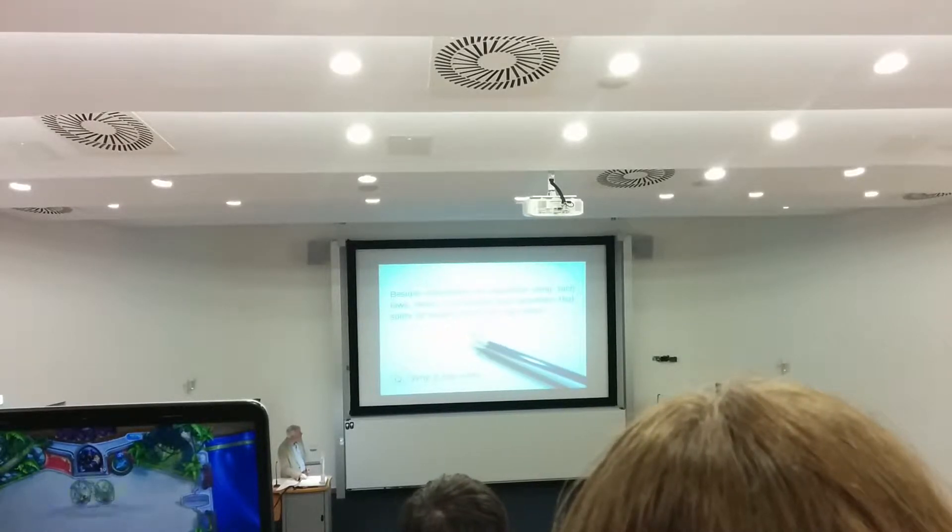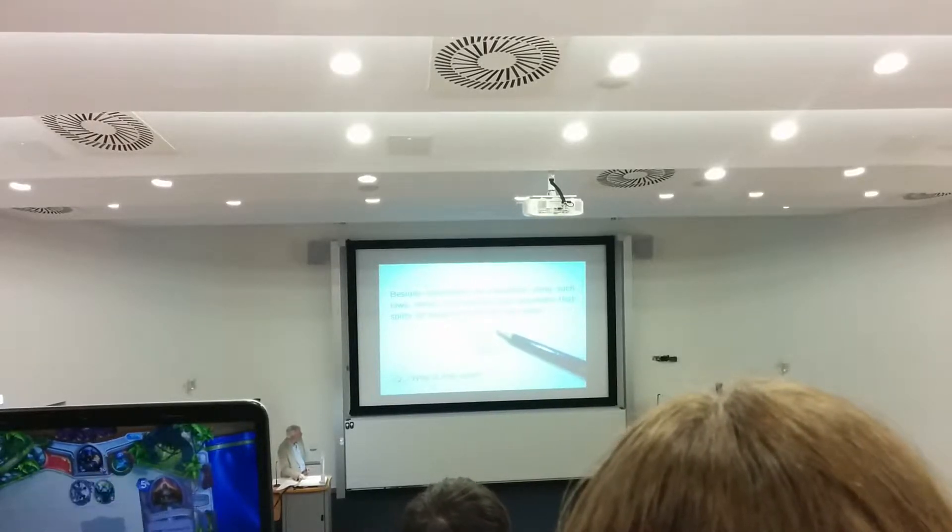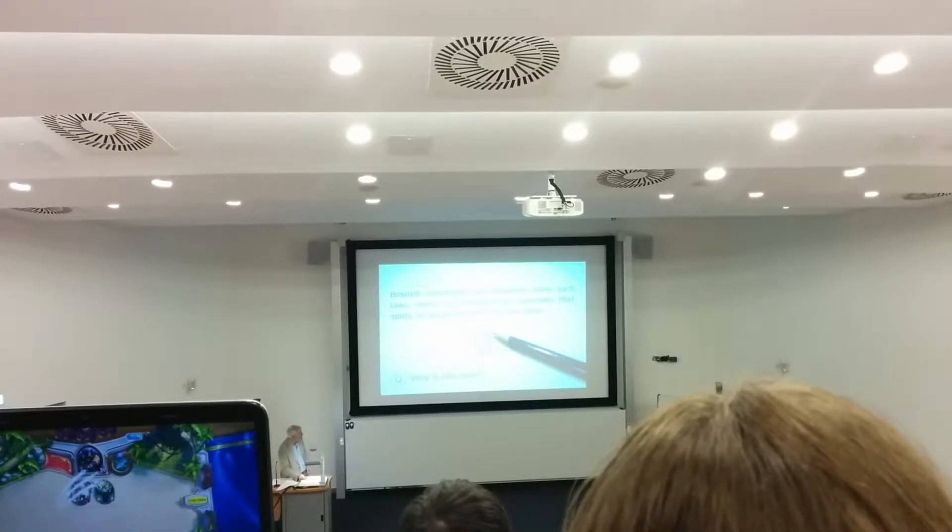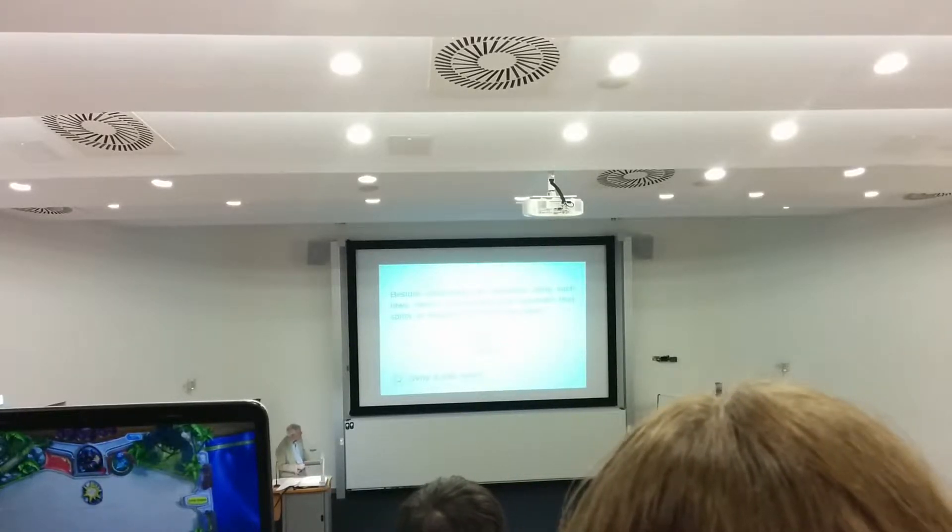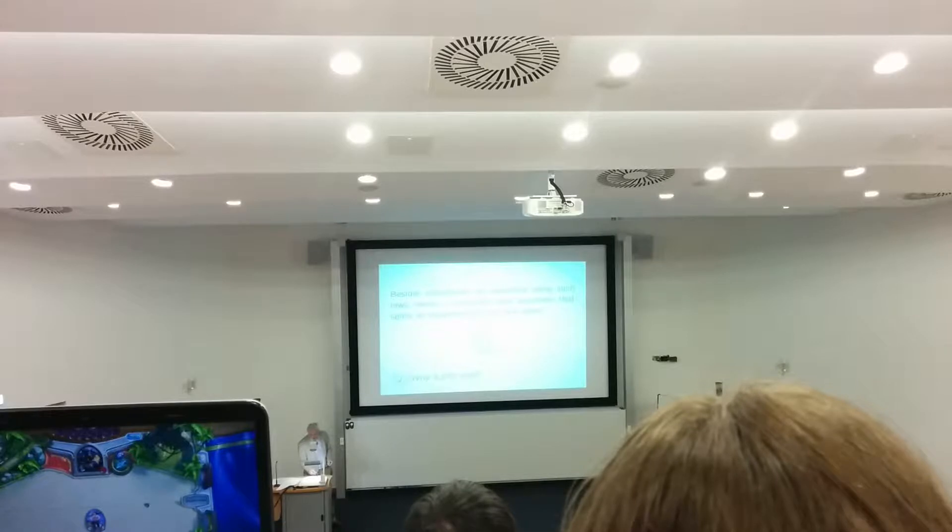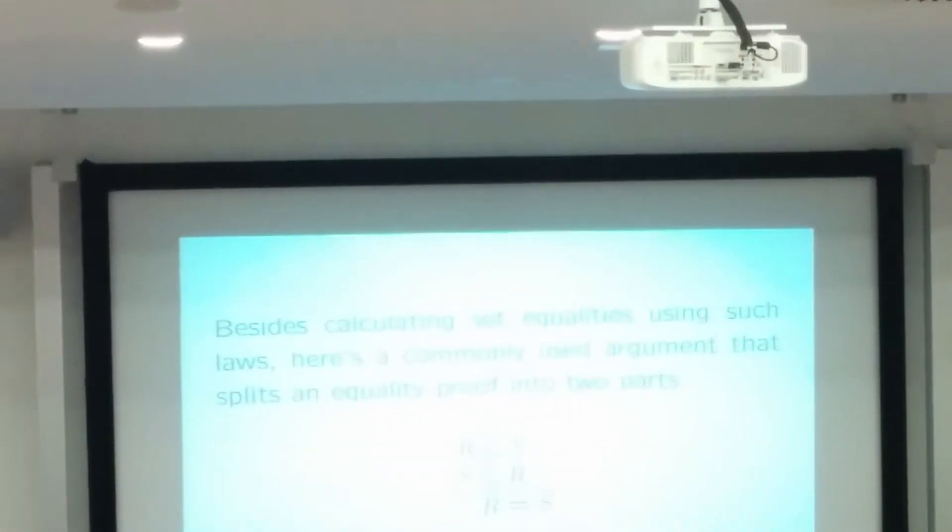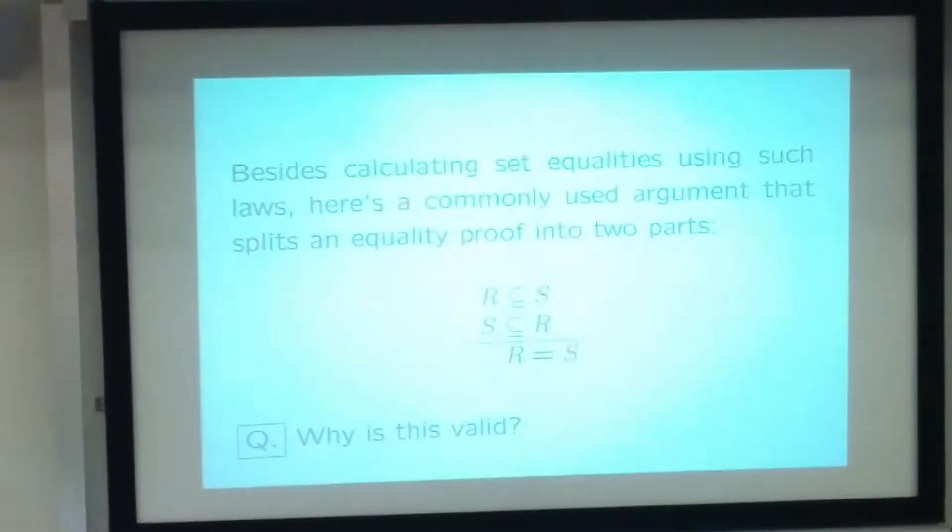So here is the logical argument: whenever it is true that R is a subset of S, and also S is a subset of R, then it will logically follow that R and S are equal sets. So just by way of a very brief revision, just discuss with your neighbour whether you agree that that's a valid line of argument, and if so, why?